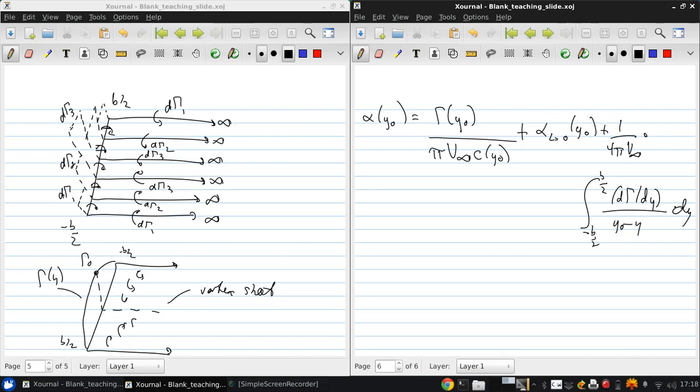This is the fundamental equation of Prandtl's lifting line theory, and it's a little complicated because it's an integral differential equation. The unknown is gamma of y0, which appears both outside and inside the integral, although its derivative is what appears in the integral.